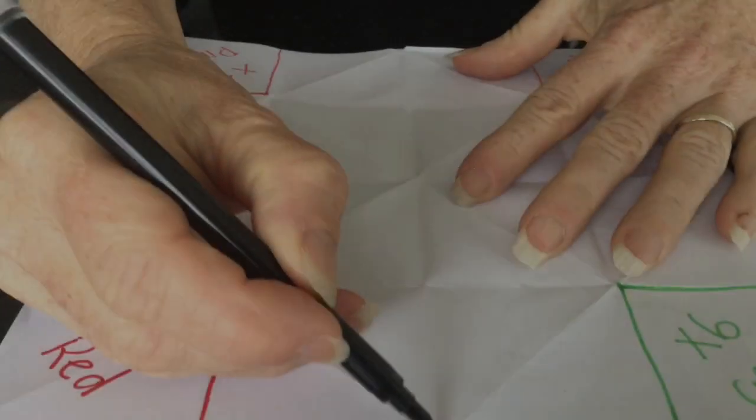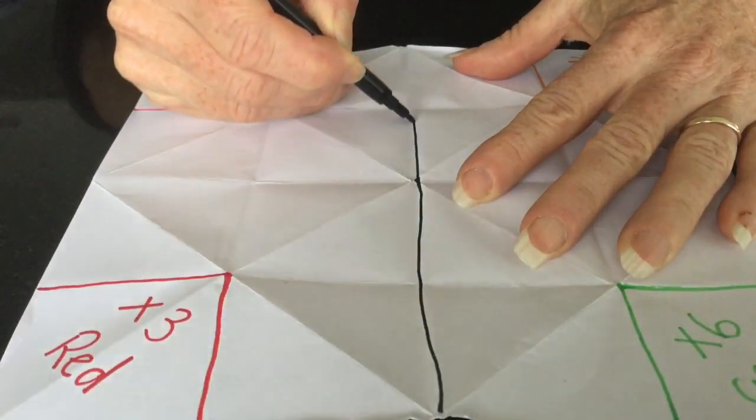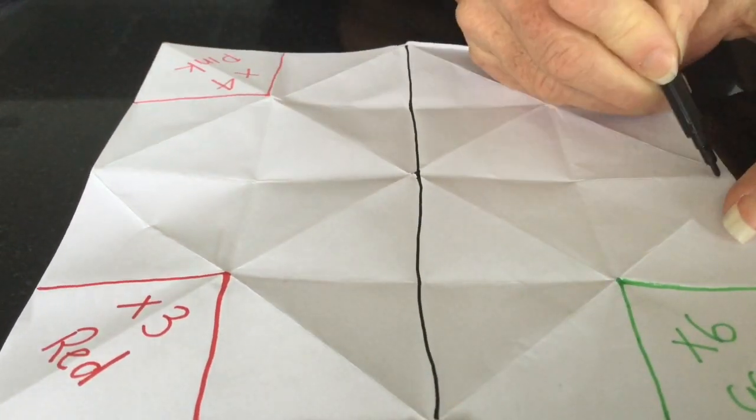So now just to make it easier, we're going to use a black felt to outline these particular shapes.